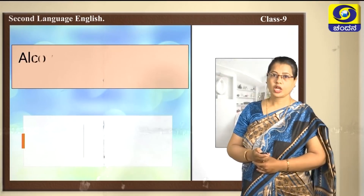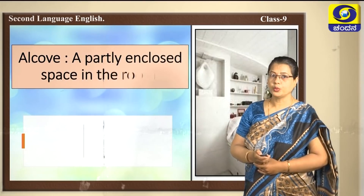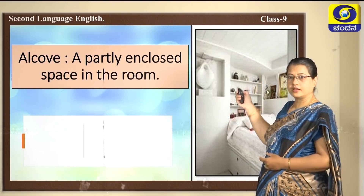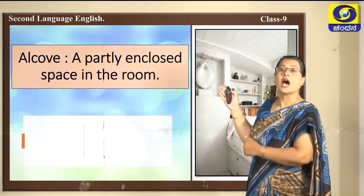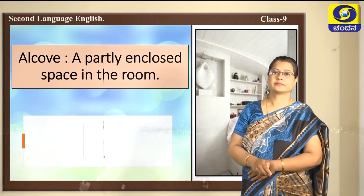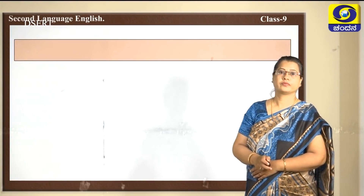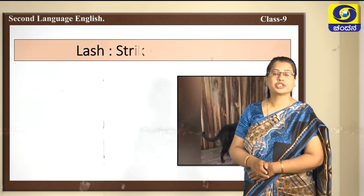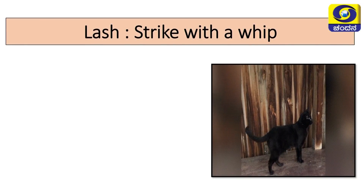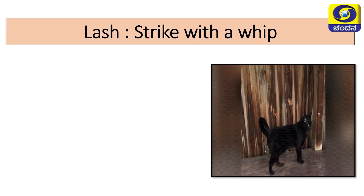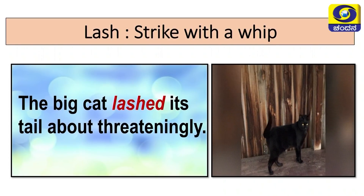The next word: alcove — a partly enclosed space in a room. You can see here a bed which is tightly fitted in the room; this place is called an alcove. Usage: 'The pet fits neatly into the alcove.' Next: lash — to strike with a whip. You can see the cat's tail and how the cat is whipping its tail. Usage: 'The big cat lashed its tail about threateningly.'